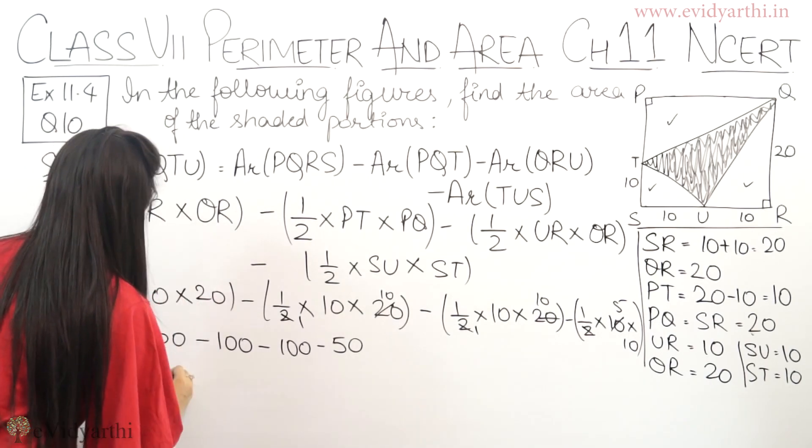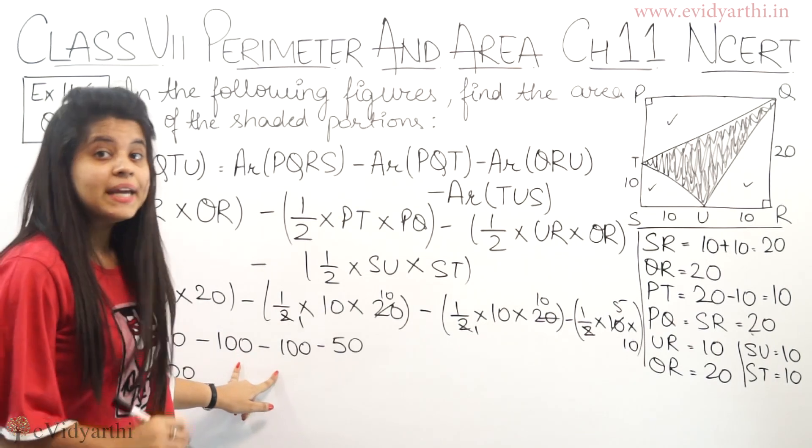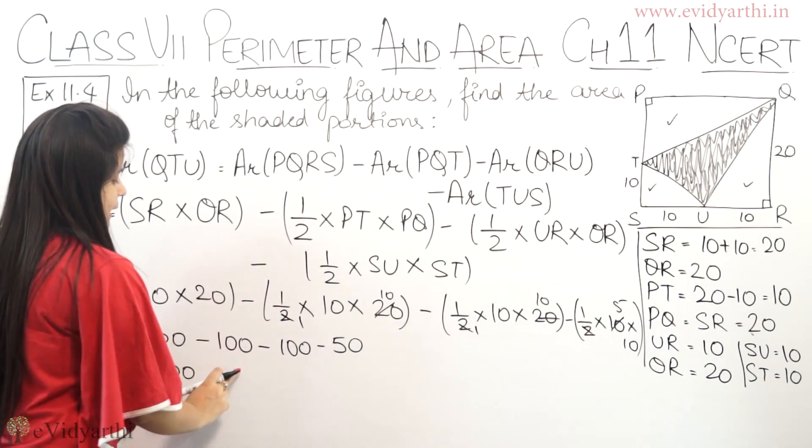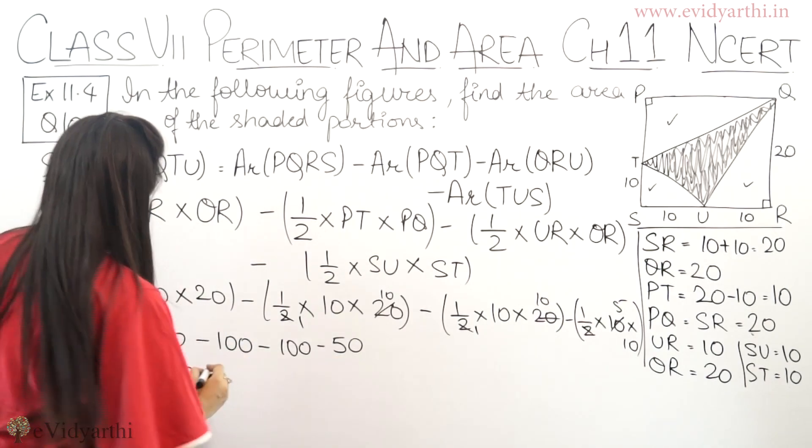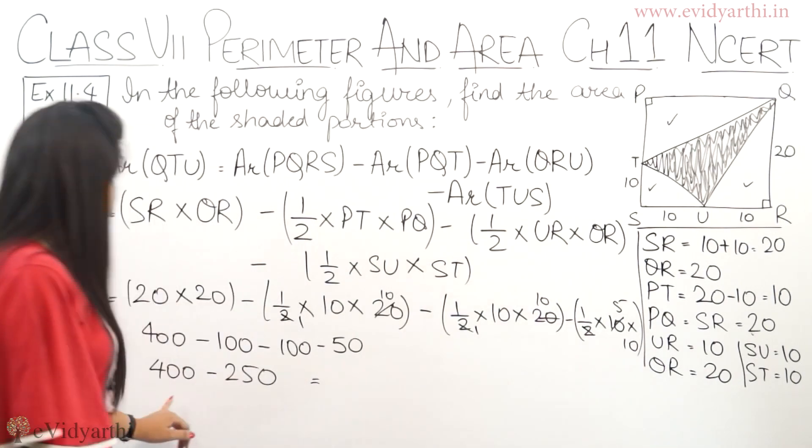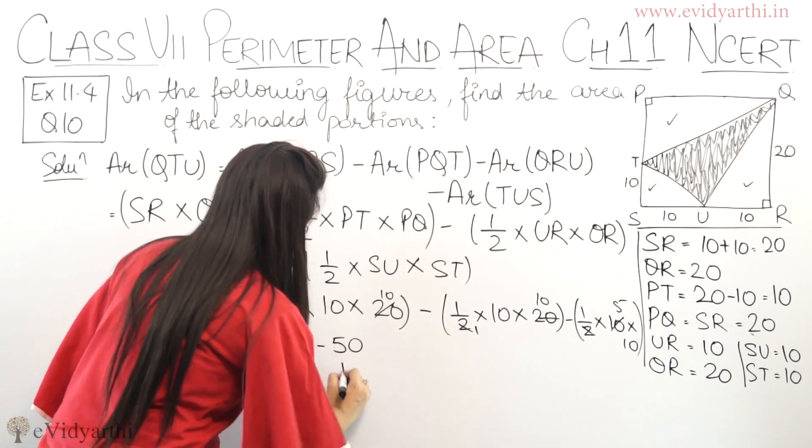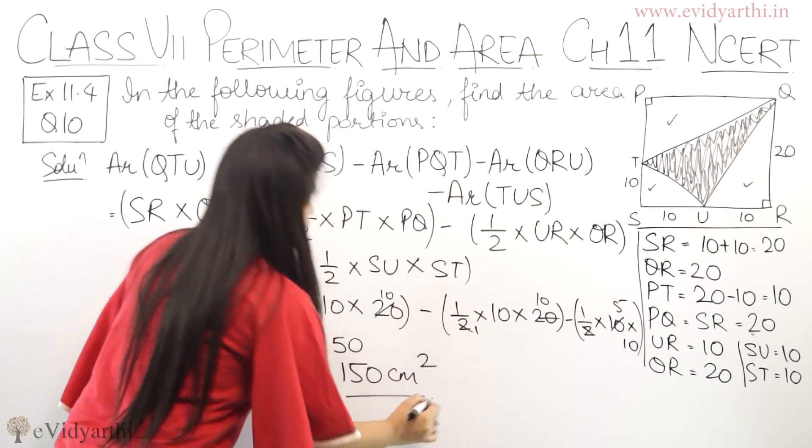We can write it as 400 minus, minus minus is plus, this will be 200. Then again minus 200 minus 50, minus minus plus, so it becomes minus 250. Now 400 minus 250 will be 150 centimeter square.